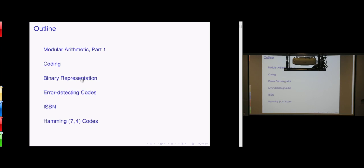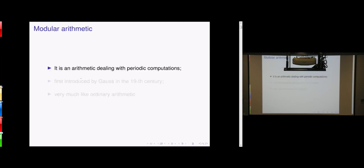Let's start with some simple arithmetic. We are going to look at arithmetic — addition, multiplication — but it's circular, it's periodic. We are going to see another kind of arithmetic. We call it modular arithmetic. It is arithmetic dealing with periodic computations.